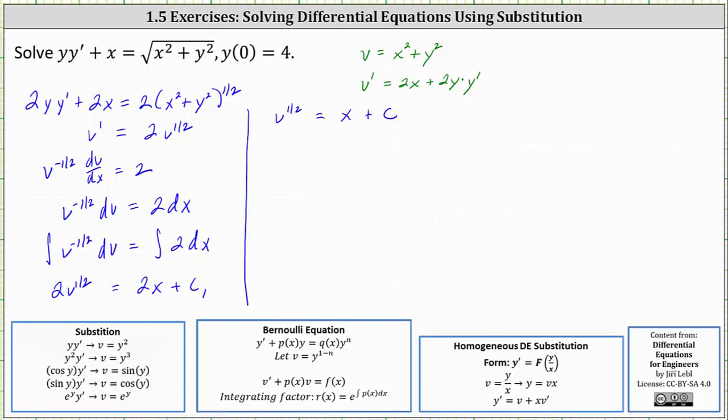And now we square both sides of the equation. Simplifying, we now know that v is equal to the square of x plus c.